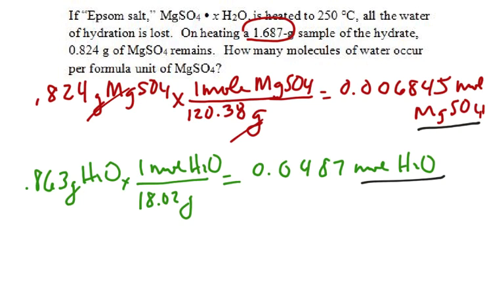But these numbers are hard to work with, so what I want to do is get them to turn into whole numbers. I'm going to take each of these two numbers and divide by the smaller of the two numbers, which is 0.006845.